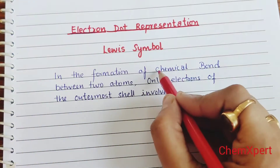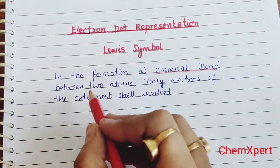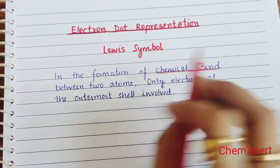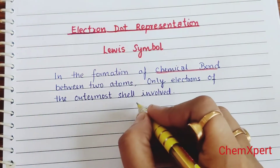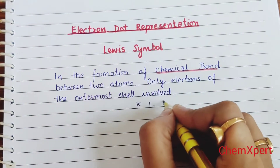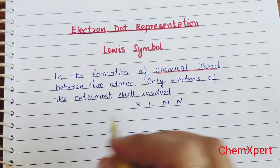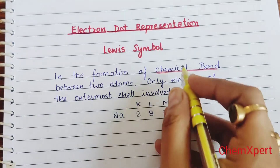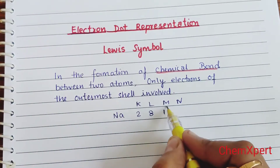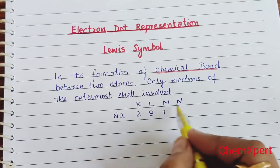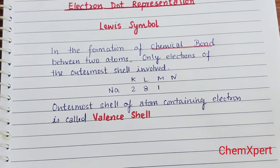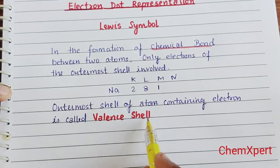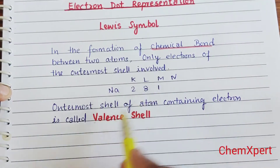In the formation of a chemical bond between two atoms, only the electrons of the outermost shell are involved. There are different shells in an atom — the K, L, M, N shells. For example, sodium has the configuration 2, 8, 1. In bond formation, only this outermost shell electron participates, and this shell is known as the valence shell. The outermost shell of an atom containing electrons is called the valence shell.